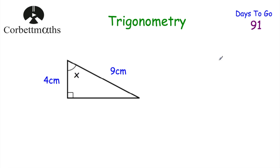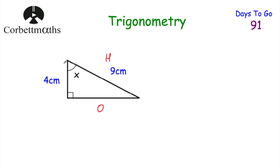So let's have a look at one for you to try yourself. We've got a right angle triangle where one length is 4 centimetres and another is 9 centimetres. Can you work out the size of this angle? Press pause and try this question now. The first thing to do is label the sides: the hypotenuse is opposite the right angle, the opposite is the side opposite the angle we're finding, and the lower side is the adjacent.